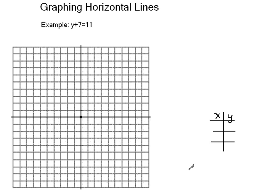Graphing horizontal lines. Here we have an example, y plus 7 equals 11. Notice that there is no x term. When one of the terms is missing, either x or y, we know what we should do first is solve for the variable that is there.